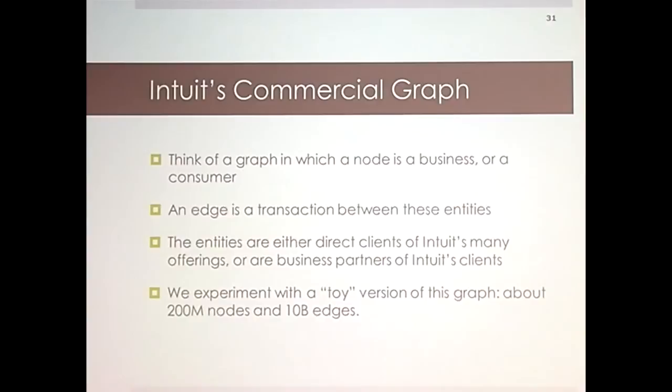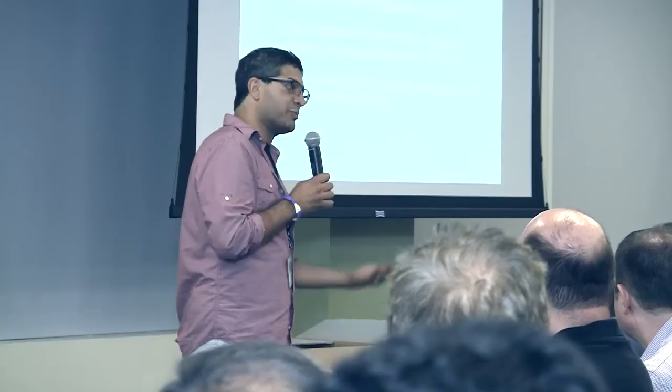How big are the graphs we're working with? The toy example used for triangle counting is about 200 million nodes and about 10 billion edges. You could buy a single machine that can represent that graph. That's what we do too — Cassovari from Twitter handles it. But that's my toy; we're basically building this graph and it's going to be a lot bigger. It's not just necessarily the businesses — all sorts of interactions will be part of it.